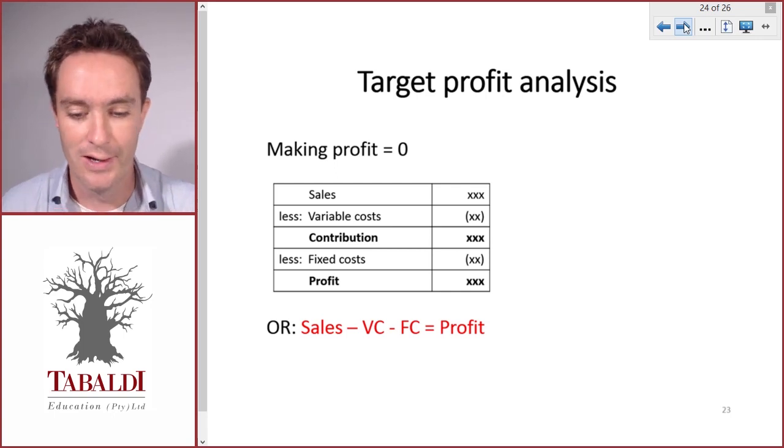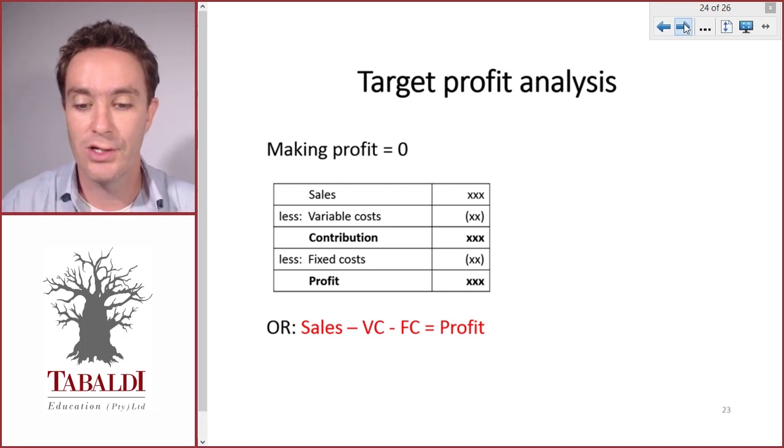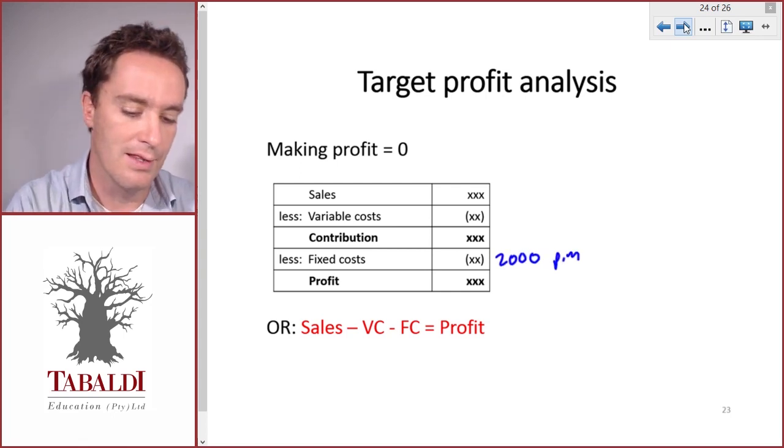So let's look at an example. Let's take a bicycle shop and we've got fixed costs of $2,000 per month, and then our sales price per unit is $100.